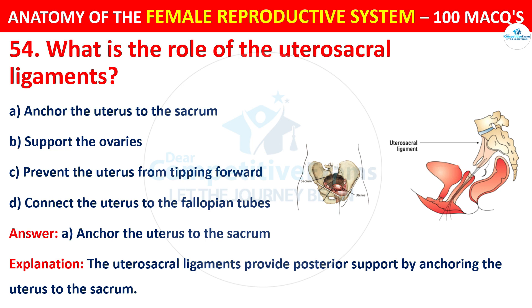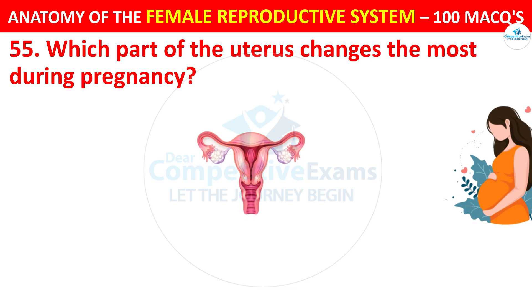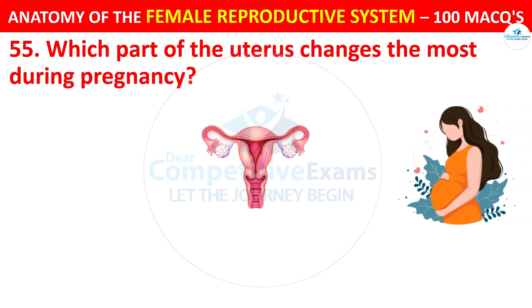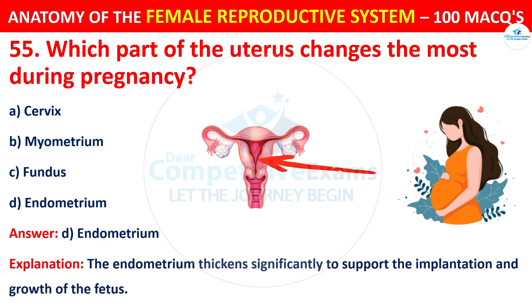Question number 55. Which part of the uterus changes the most during pregnancy? Options: cervix, myometrium, fundus, or endometrium. The correct answer is D — the endometrium. The endometrium thickens significantly to support the implantation and growth of the fetus.